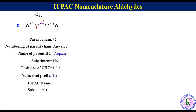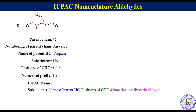The IUPAC name consists of substituents + name of parent hydrocarbon + position of CHO + numerical prefix + 'carbaldehyde'. Thus, the IUPAC name of this molecule will be propane-1,2,3-tricarbaldehyde.